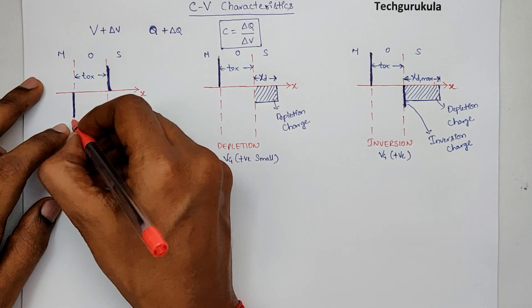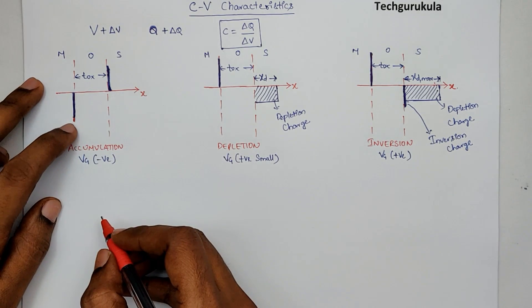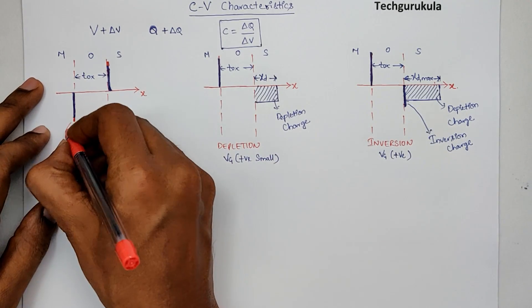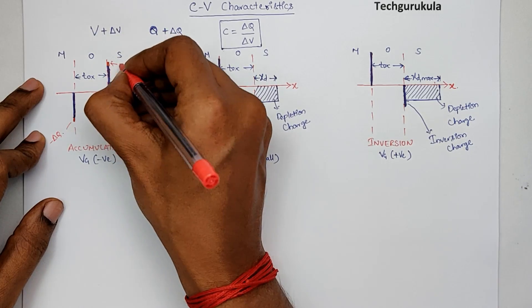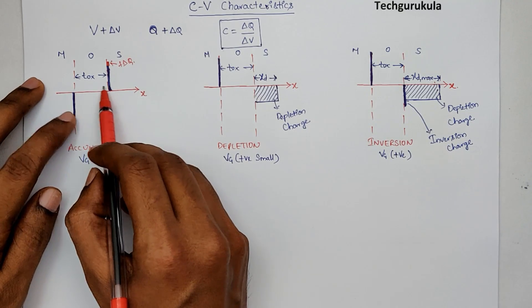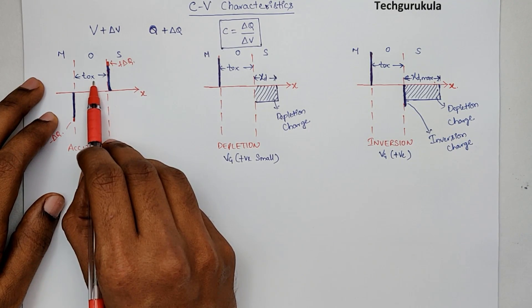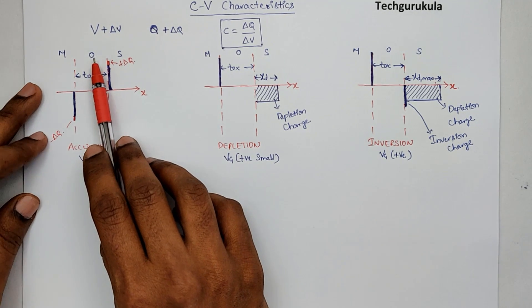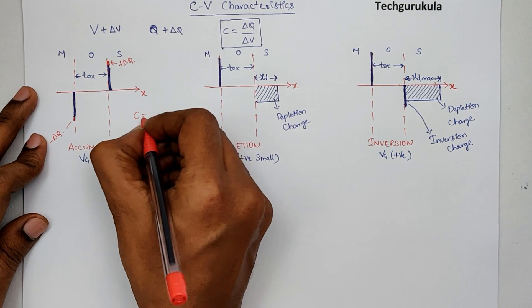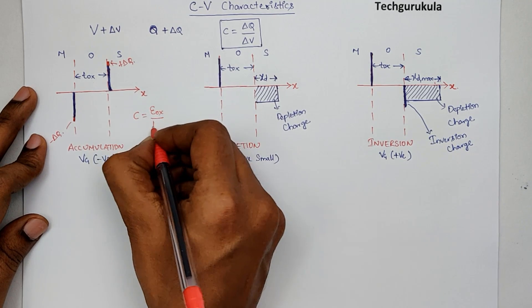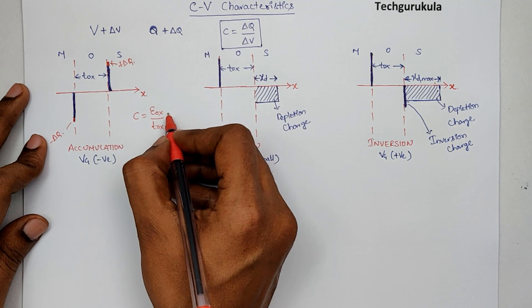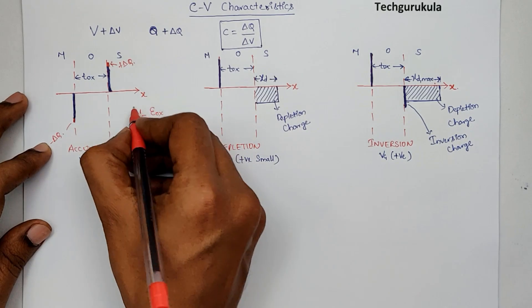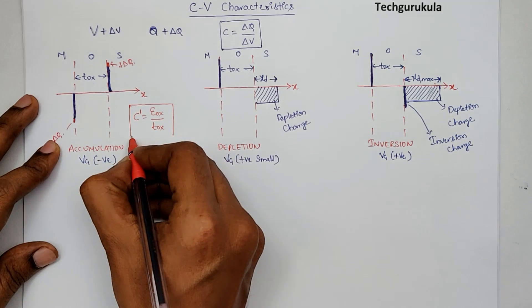Because of a small delta V increase, there will be a delta Q that gets added on the metal, and exactly that much delta Q will be present on the semiconductor side. So this minus delta Q and plus delta Q are separated by a distance of T_ox, with epsilon of oxide in between. We can say the capacitance here is C equals epsilon_ox over T_ox, where epsilon_ox is epsilon_r_oxide times epsilon_naught. If you want capacitance per unit area, this itself is the formula. So the capacitance in accumulation mode is epsilon_ox over T_ox.